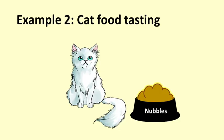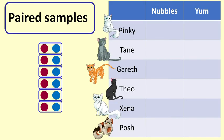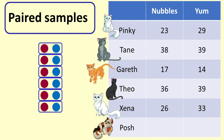Here is another example of paired data. We wish to test which of two cat food varieties is more appealing to cats. We have a sample of 15 cats. On one day we offer each cat one variety, Nubbles, and measure how much it eats. The next day we offer the other variety, Yum, and again measure how much each cat eats. This is paired data, as there is one sample of cats and the measurements are taken twice on each cat.